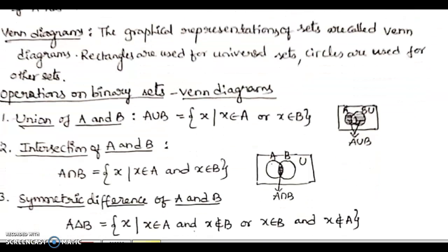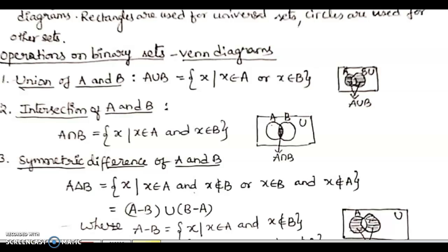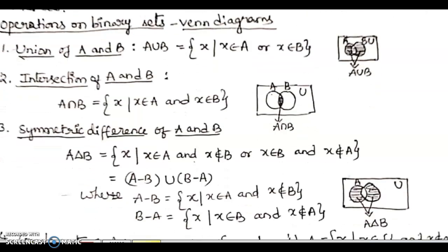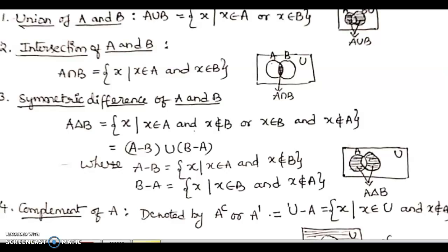Now, coming to the Venn diagrammatic representation of the set. The graphical representation of sets is called a Venn diagram. In Venn diagrammatic representation, rectangles are used to denote the universal set, and circles are used to denote the given sets. Let us see what are the basic operations possible on the given binary sets using Venn diagrams. The first one is the union of A and B, denoted by A union B, and defined as the set of elements x such that x belongs to A or x belongs to B.